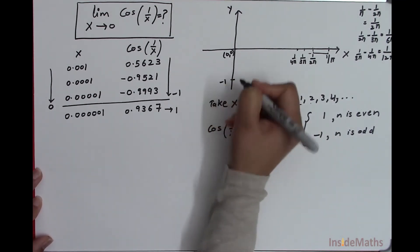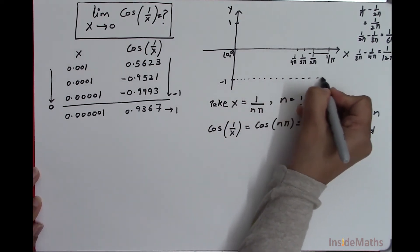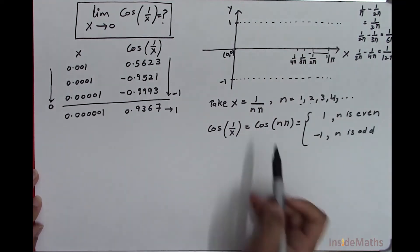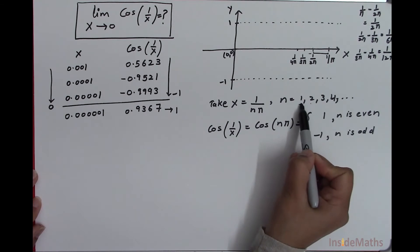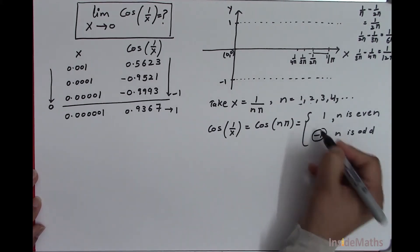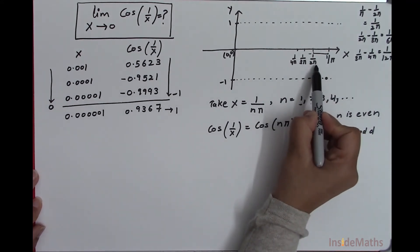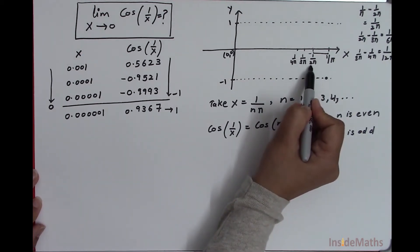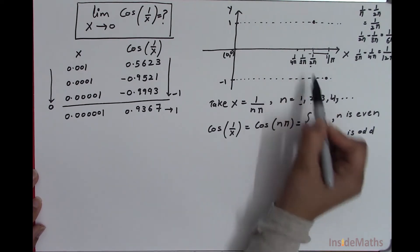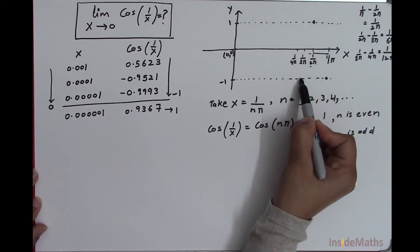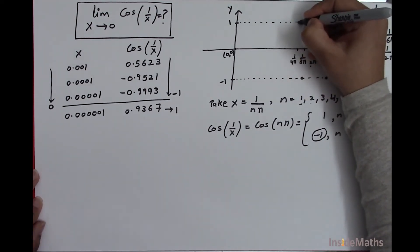On the y-axis I will mark negative 1 and positive 1. When x is 1 by pi, cos of 1 by x is negative 1 since n is odd. When x is 1 by 2 pi, cos of 1 by x is positive 1 since n is even. When x is 1 by 3 pi, cos of 1 by x is negative 1. When x is 1 by 4 pi, cos of 1 by x is positive 1.